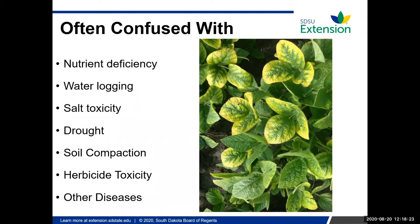SCN can be confused with a number of different things, including nutrient deficiency like iron chlorosis, waterlogging of the soil, salt toxicities, drought, soil compaction, herbicide toxicities, and other diseases. It's not always easy to tell by above-ground symptoms alone — we need to look underground and check the soil.